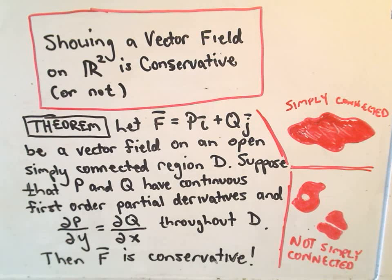In this video I want to talk about showing whether or not a vector field on R² is conservative. And what the theorem says, it says let our vector field F be defined by Pi + Qj. We've got a vector field on an open, simply connected region.